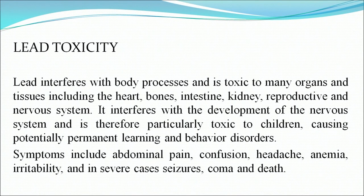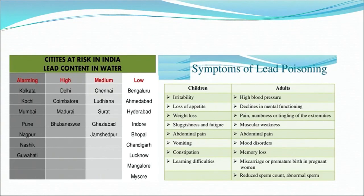Let us study the toxic effects of some heavy metals which are a major threat to health. First: lead. Lead interferes with body processes and is toxic to many organs and tissues including the heart, bones, intestine, kidney, reproductive and nervous system. It interferes with the development of the nervous system and is therefore particularly toxic to children, causing potentially permanent learning and behavior disorders. Symptoms include abdominal pain, confusion, headache, anemia, irritability, and in severe cases seizures, coma and death. Various Indian cities are categorized by lead content in water — alarming (Kolkata, Kochi, Mumbai, Pune, Nagpur, Nasik, Guwahati), high (Delhi, Coimbatore, Madurai, Bhubaneswar), medium (Chennai, Ludhiana, Surat, Ghaziabad), and low (Bangalore, Ahmedabad, Hyderabad, Indore, Bhopal, Lucknow).